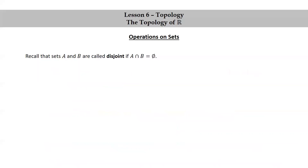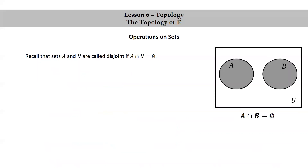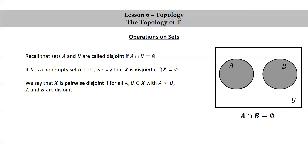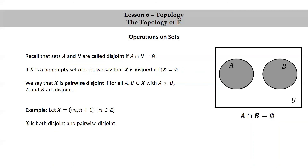One last thing. Recall that sets A and B are called disjoint if their intersection is empty. More generally, if X is a non-empty set of sets, we say that X is disjoint if intersection X is equal to empty. We say that X is pairwise disjoint if for all A, B in X with A not equal to B, A and B are disjoint. As an example, let X be the set of open intervals of the form (N, N+1), where N is in Z. X is both disjoint and pairwise disjoint.